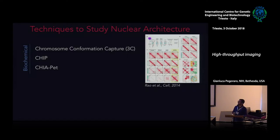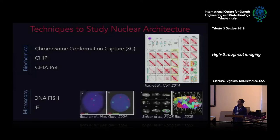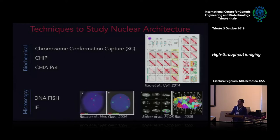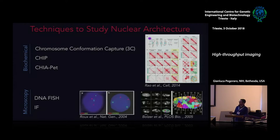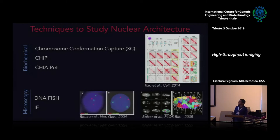The other class of techniques is microscopy-based, taking advantage of DNA fluorescence in-situ hybridization. With sequence-specific probes, it's possible to identify specific genomic loci in the nucleus as dots in a fluorescence microscopy image. We can also visualize chromosome territories with chromosome paints, but I won't discuss that today.